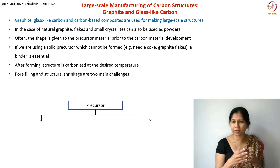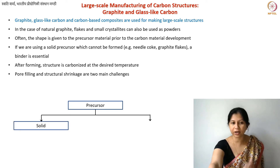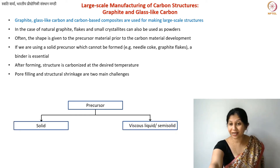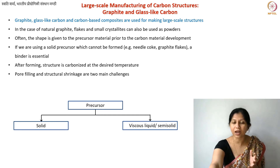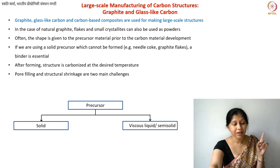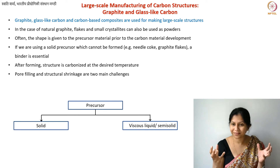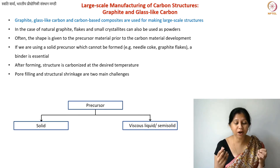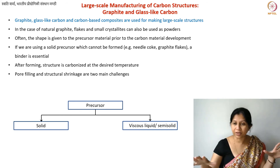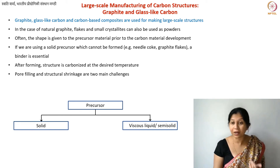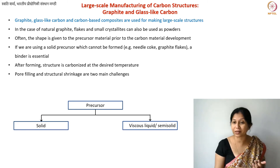Here is a quick chart of what I just described. You have a precursor — either a solid-state precursor or a viscous liquid-type precursor. We are not talking about gaseous hydrocarbon precursors right now because with gaseous hydrocarbons you're not going to make a structure. With gaseous hydrocarbons you will either get films or coatings, which often happens in the case of diamond-like carbon and pyrolytic graphite.